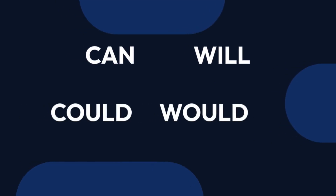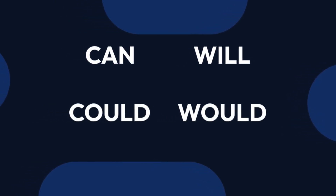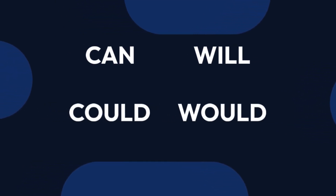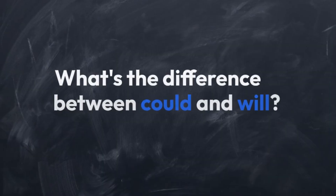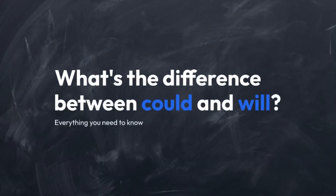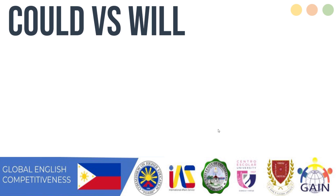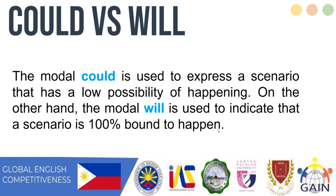Here are some of the useful word expressions that state opinions. We have can, could, will, and would. The modal could is used to express a scenario that has a low possibility of happening. On the other hand, the modal will is used to indicate that the scenario is 100% bound to happen.